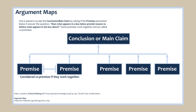An argument map is another diagramming technique to consider. Jonathan Haber says one is asked to accept the conclusion or main claim by asking if the premises presented below it answer the question: 'Does what appears in a box below provide reasons to believe what appears in the box above?' Some premises work together and are called co-premises. This technique pulls from both the syllogism and the Toulmin techniques.